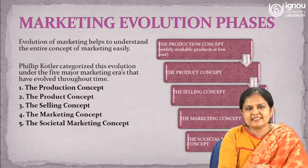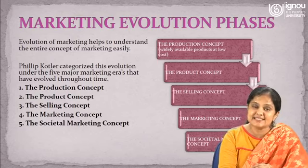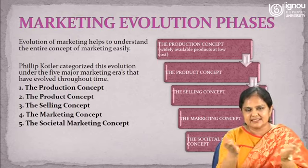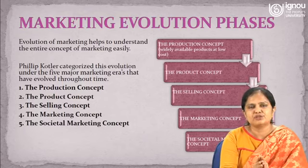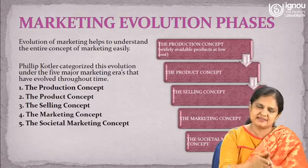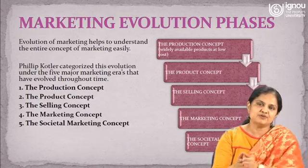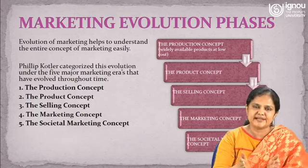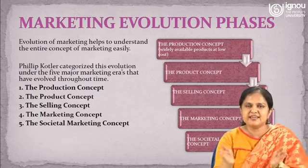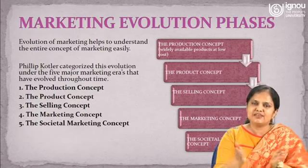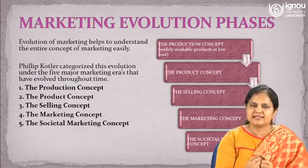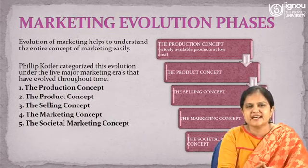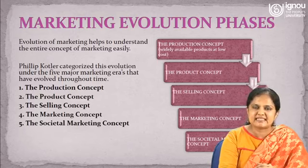Let us quickly see what the marketing evolution phases are. As I said, I have divided the entire period into two parts: one is the pre-industrial revolution era and the second is the post-industrial revolution era. If we divide the post-industrial revolution era further, we can see certain changes in market dynamics. Those changes gave rise to various approaches of marketing, which can be classified as production concept, product concept, selling concept, marketing concept, and societal marketing concept.